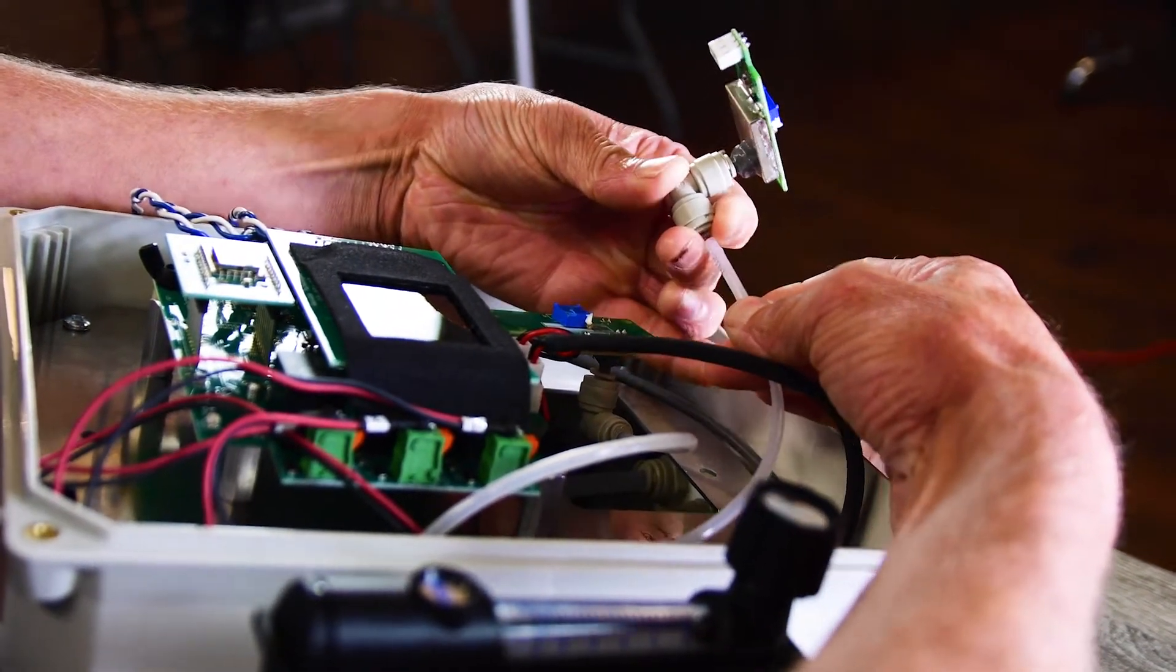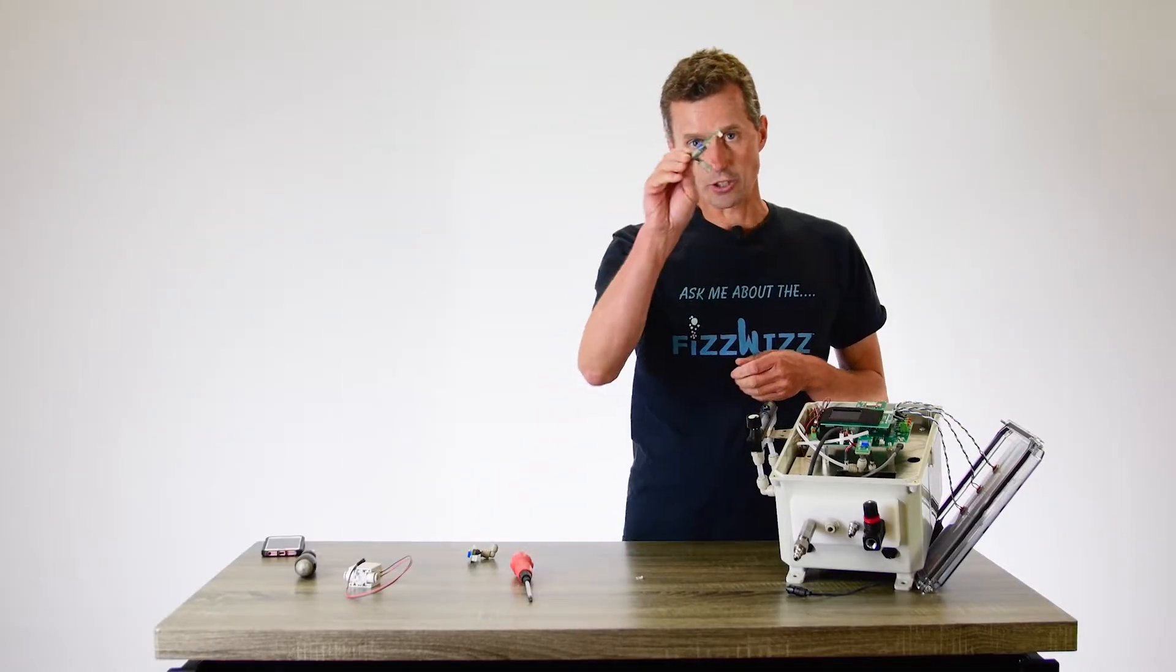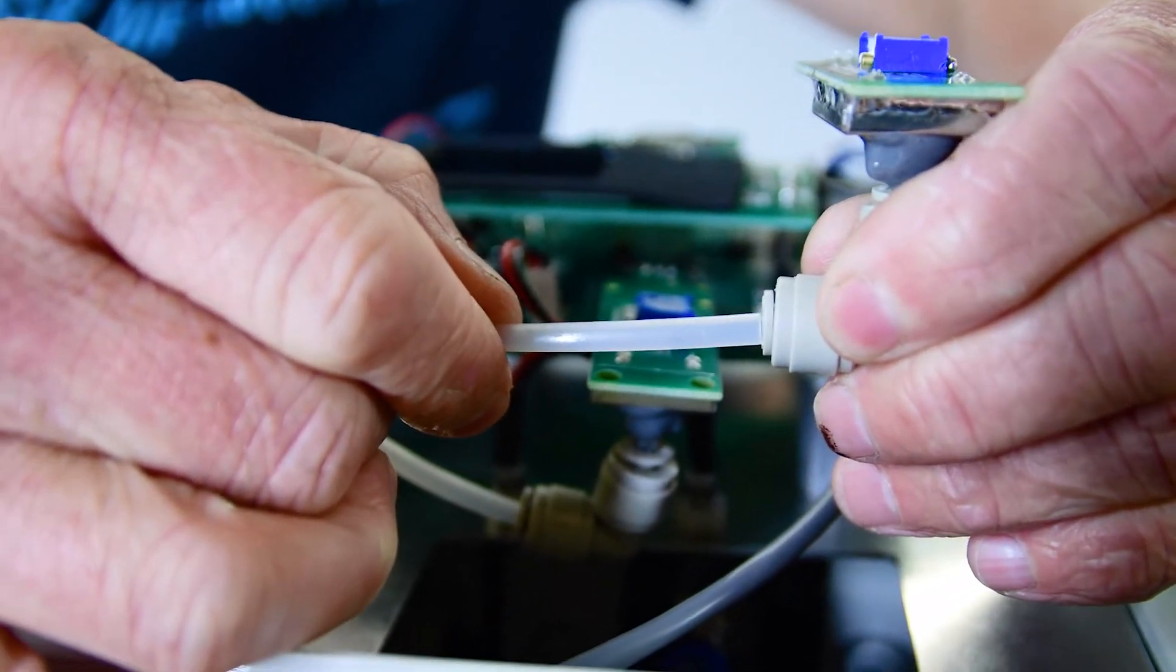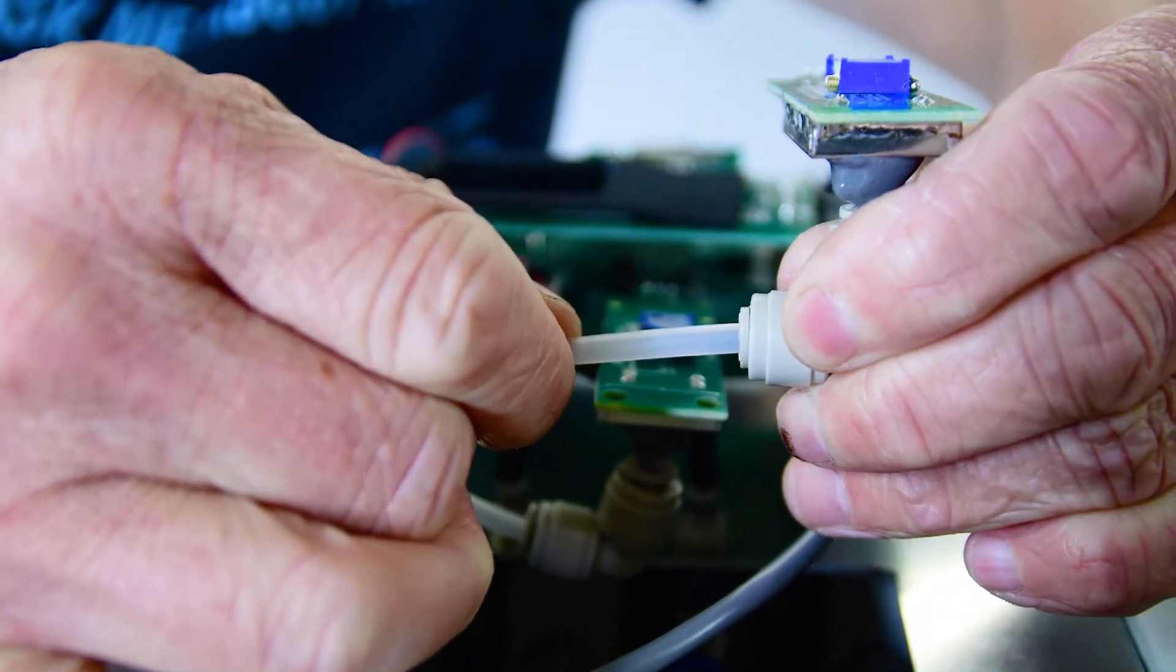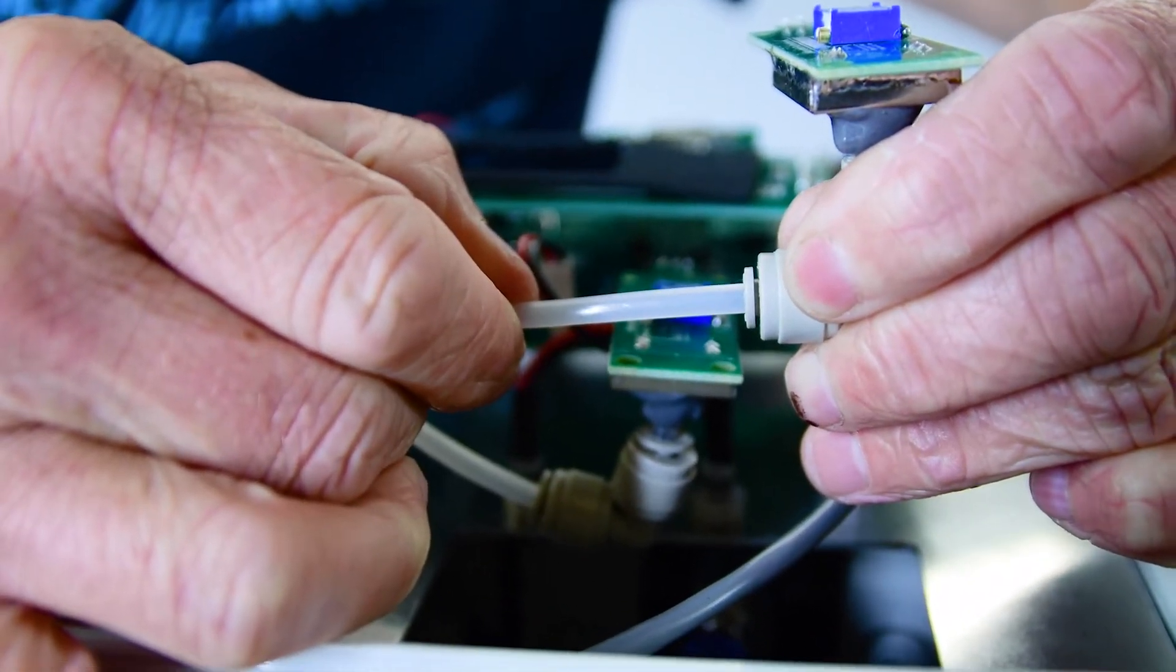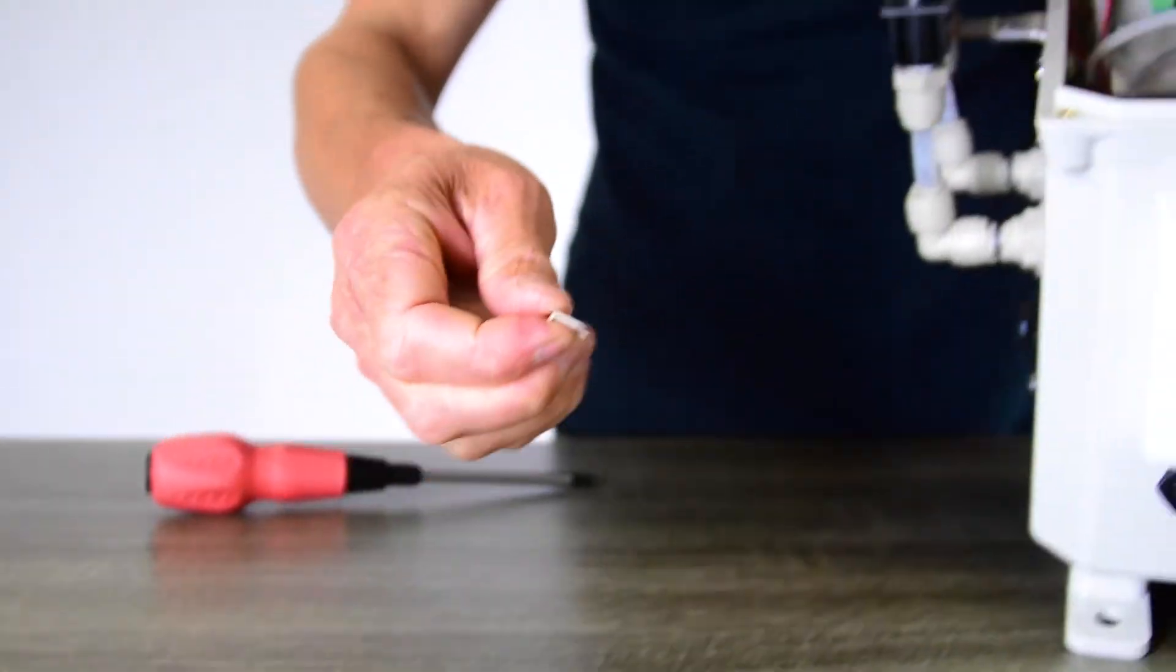Take our new transducer and we're going to push that pipe in. You have to make sure the pipe goes in quite a distance, about a centimeter or so of plastic is going to push into the pipe there. Then the little clippy thing has to go back in.